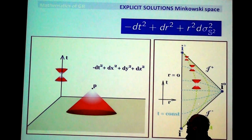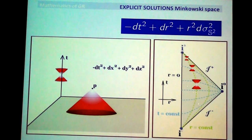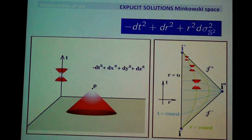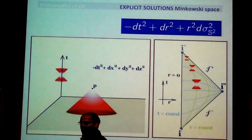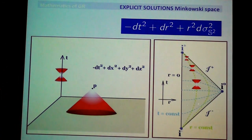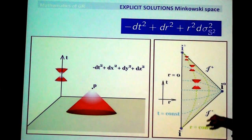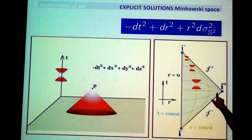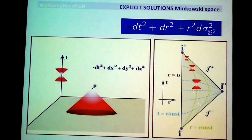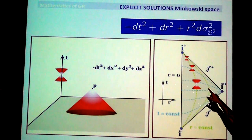Let's go through each particular solution. First, Minkowski space, which we already discussed. On the right you see a conformal compactification of Minkowski space. Just as you compactify R^n by adding a point at infinity, you can also compactify a Lorentzian manifold by adding boundaries — three-dimensional manifolds at infinity.